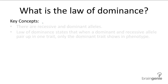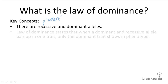Mendel could not pinpoint the mechanisms behind his laws, but today we know about genes and alleles and therefore have a much clearer picture about what's going on in the law of dominance. First thing to know, there are recessive and dominant alleles. Recessive alleles are those alleles that are masked in the presence of other alleles, so they aren't expressed. Dominant alleles are the exact opposite — they're the ones doing the masking, so they are expressed in the presence of other alleles.